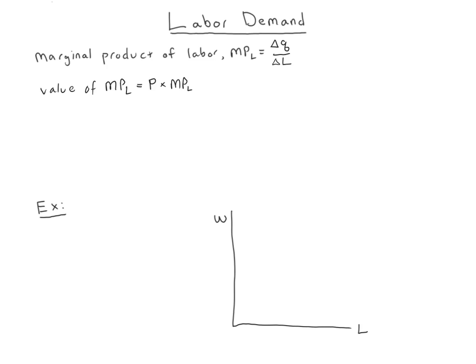As long as that extra money the firm gets is bigger than the extra cost it has to pay from hiring the worker, then the firm is going to want to continue to hire. Kind of like with our marginal revenue equals marginal cost equation, we're going to get an equation here that says keep hiring workers as long as the value of the marginal product of labor is greater than or equal to the cost of hiring workers.